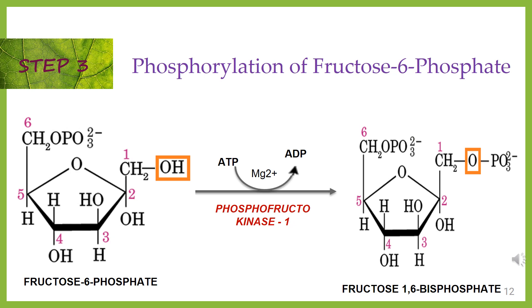Step 3: phosphorylation of fructose-6-phosphate. In this step, another ATP molecule transfers a phosphate group to fructose-6-phosphate, converting fructose-6-phosphate into fructose-1,6-bisphosphate by the involvement of the enzyme phosphofructokinase-1.